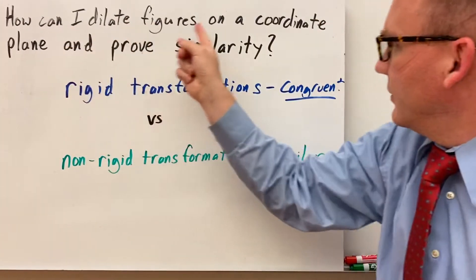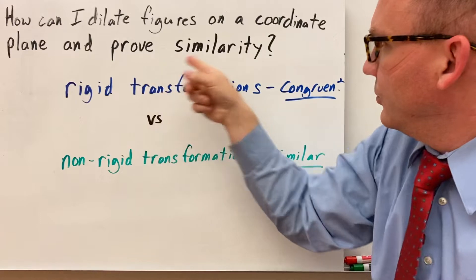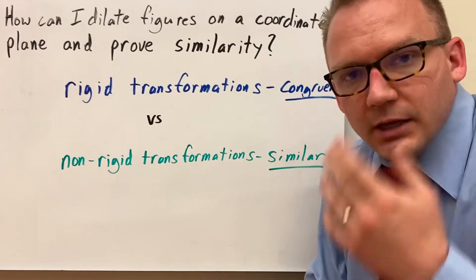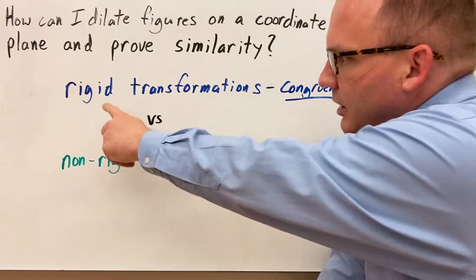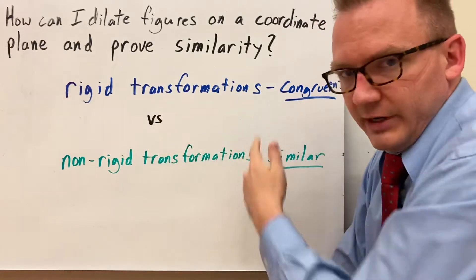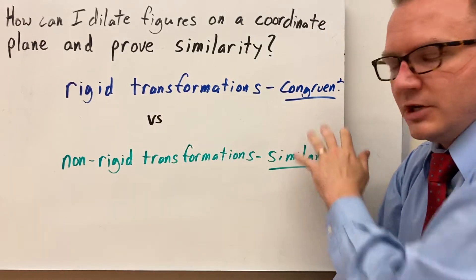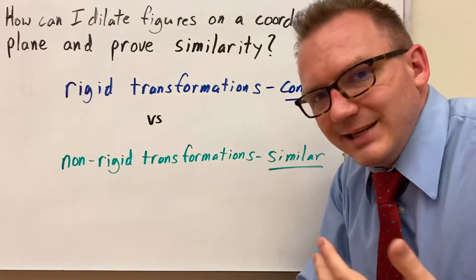How can I dilate figures on a coordinate plane and prove similarity? So we've talked about transformations. So far we've talked only about rigid transformations and that's where you end up with a congruent or basically all your sides and angles are exactly the same.